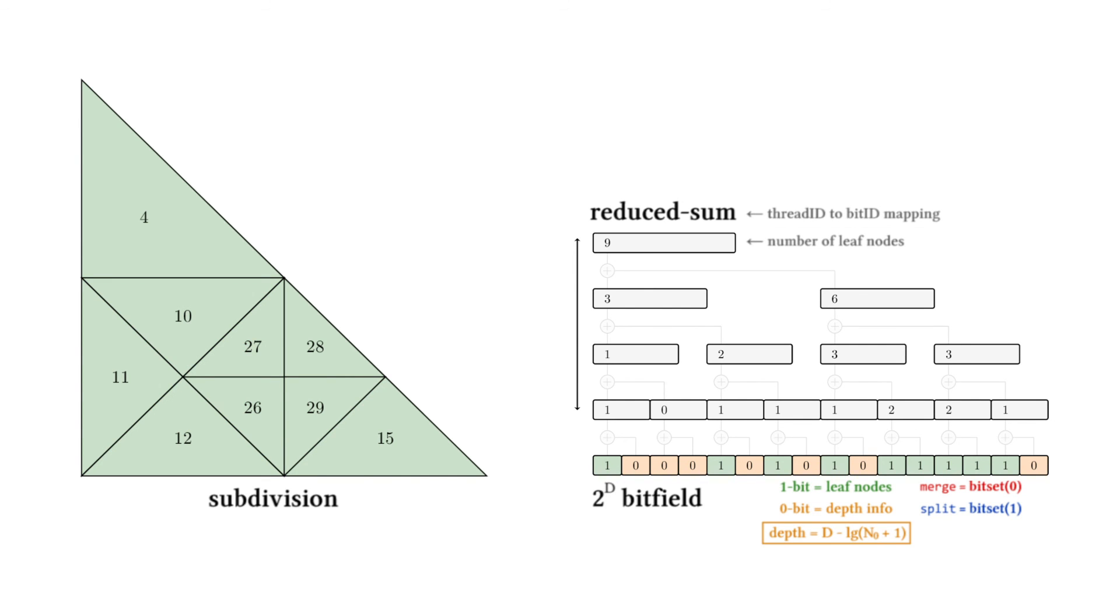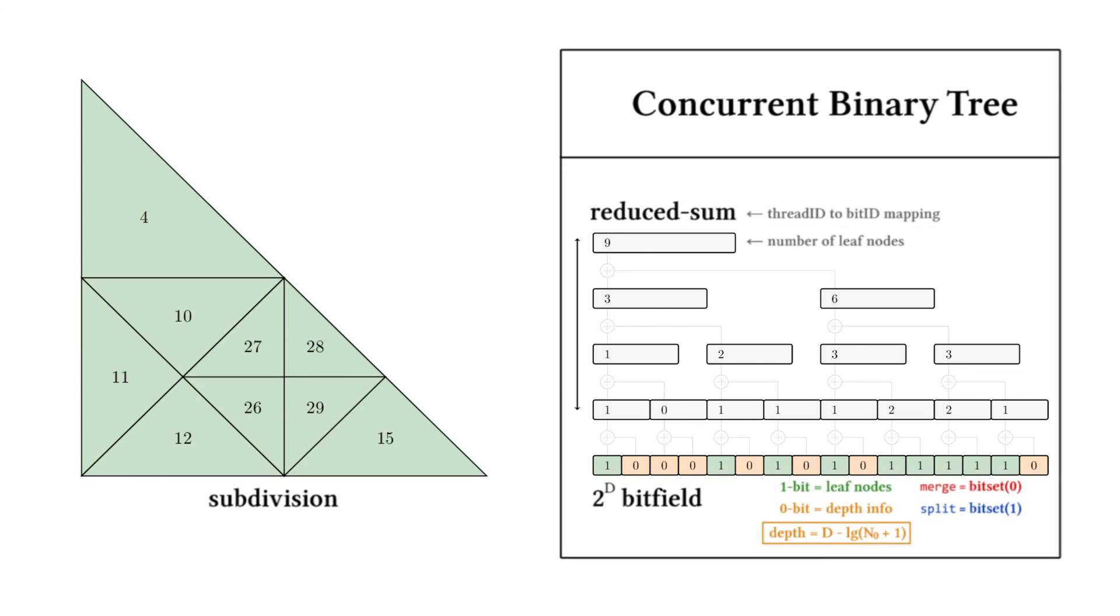Storing the bit field and its reduced sum as a binary heap forms what we refer to as a concurrent binary tree. For more details, please refer to our paper.